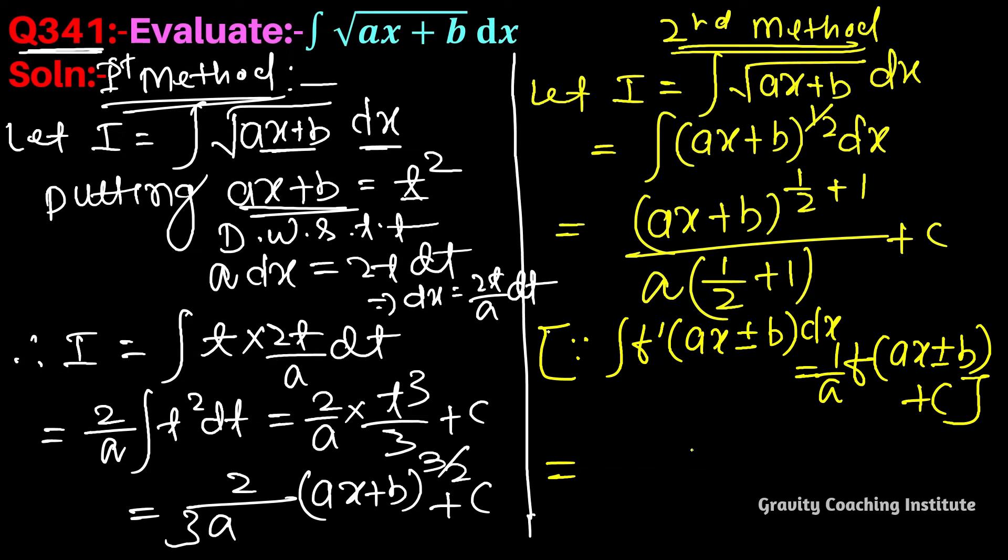So it equals (ax+b)^(3/2). When we calculate this, it gives 3/2, so we get 2/3a times (ax+b)^(3/2) plus c. Thank you.